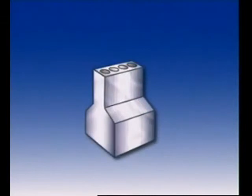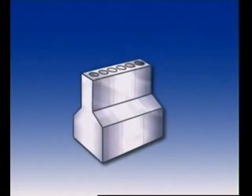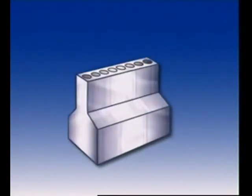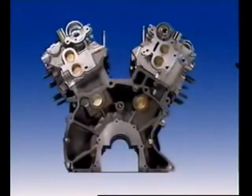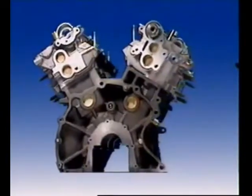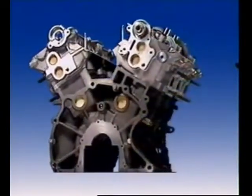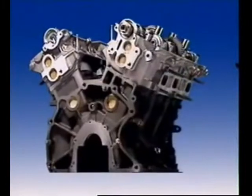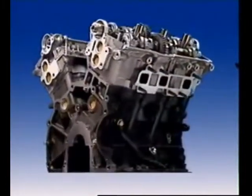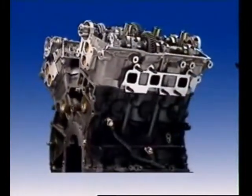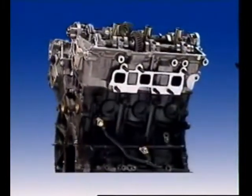As the number of cylinders increases, the length of the block and the crankshaft can become a problem. One way to avoid this is with a V configuration. This design makes the engine block and the crankshaft shorter and more rigid.